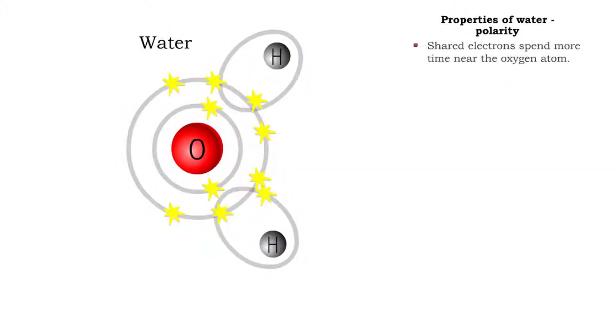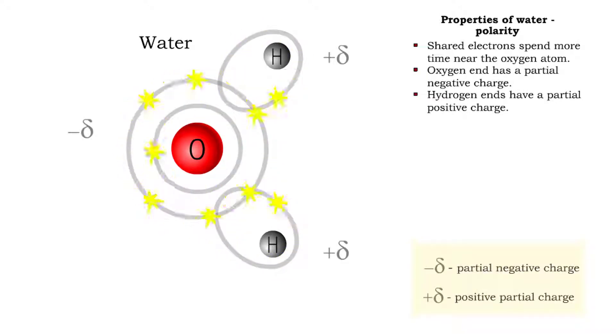In water, the electrons spend more time near the oxygen atom, giving it a partial negative charge. The hydrogen ends have a partial positive charge. A molecule that has different partial charges is known as a polar molecule.